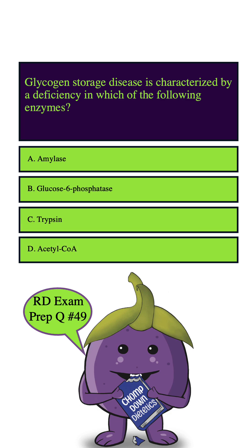So let's highlight our key words: glycogen storage disease, characterized, deficiency, and enzymes. Starting with A, amylase is an enzyme that helps break down carbohydrates into sugars during digestion. Glycogen storage disease is not caused by an amylase deficiency, so we can safely eliminate this answer choice.